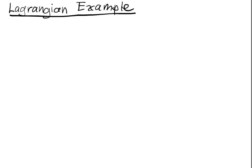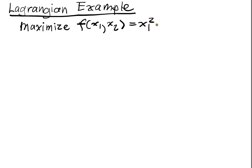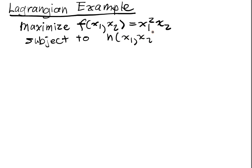We'll show an example of the Lagrangian in action. We want to maximize f of x1, x2, which is equal to x1 squared times x2, subject to the constraint h of x1, x2 equal to 2x1 squared plus x2 squared equals 3. That's our constraint.